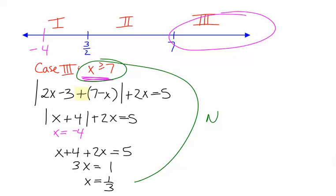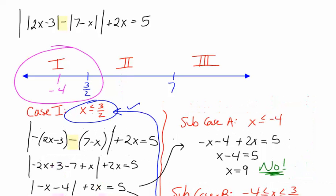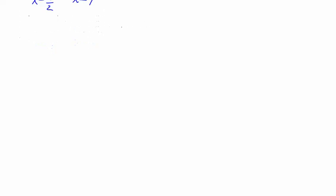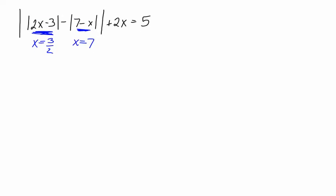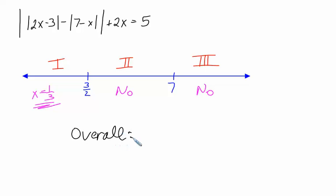Going back to look at how things panned out: in case 1 we had a solution, x equals 1/3. In case 2 we had no solutions. In case 3 we had no solutions. So overall, our answer to this problem is x equals 1/3.